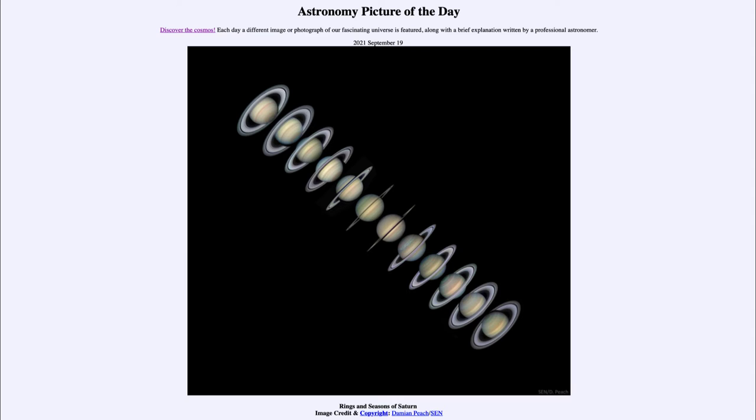So what do we see here? We see the planet Saturn in a number of different images taken between 2004 and 2015, one image from each year. What we notice is that the orientation of the rings appears to change.